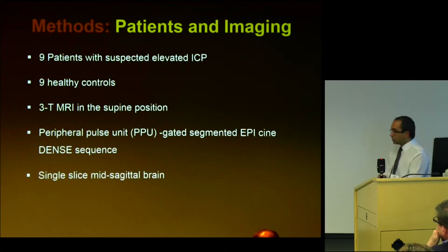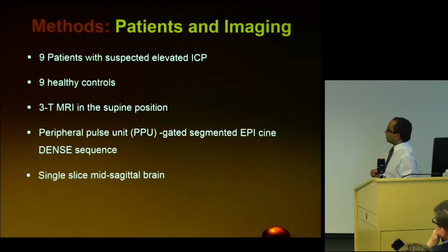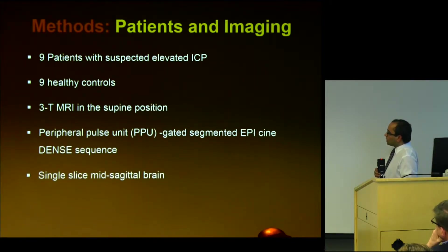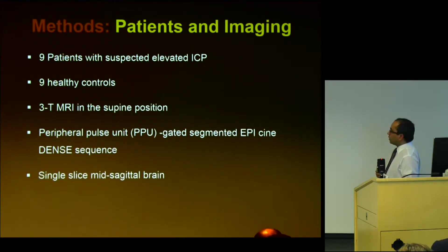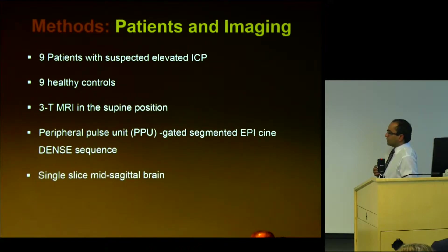We had nine patients with suspected elevated intracranial pressure — they all went on to have a diagnosis of IIH — as well as nine healthy controls. They were all studied in a 3T Siemens TRIO MR scanner with peripheral pulse unit gating, so it's cardiac gated.